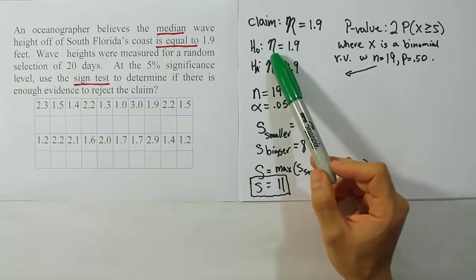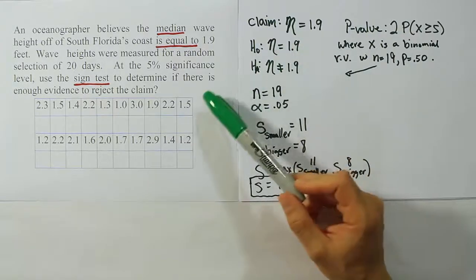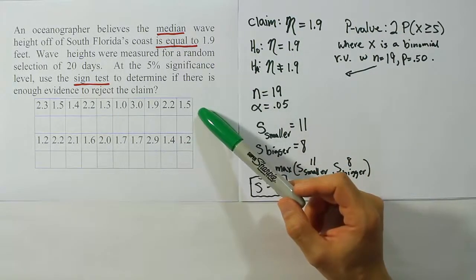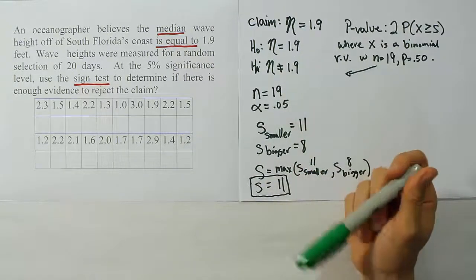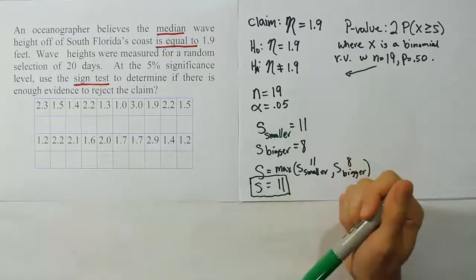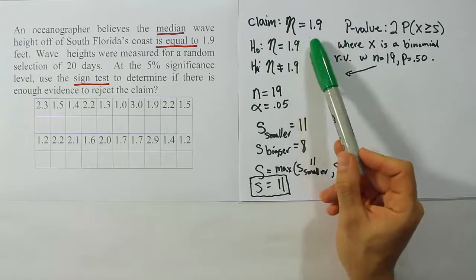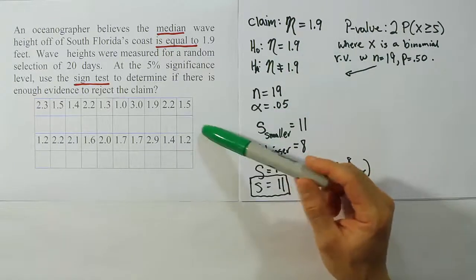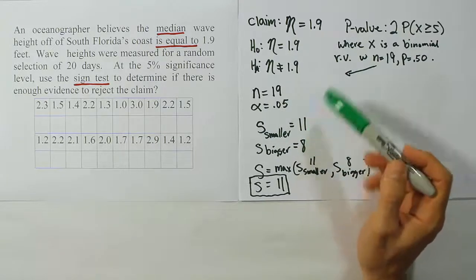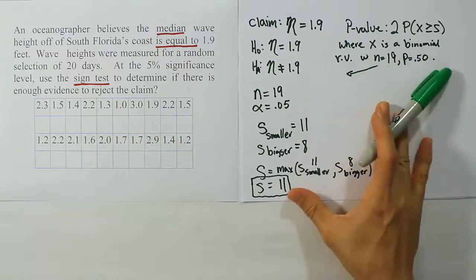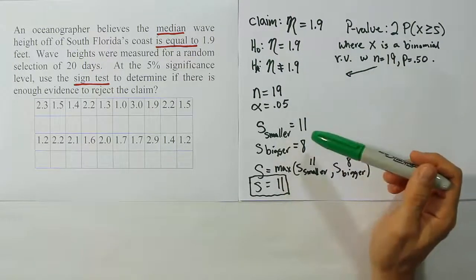Let's discuss that step just for a moment. We assume that X is a binomial random variable because basically this procedure is being tested about the median. And what we're saying is that essentially the median has a 50-50 chance, and any number from our data set, if the median really is 1.9, has a 50-50 chance of being either above or below. There's a 50% chance you're below the median, a 50% chance you're above the median because the median is defined as the 50th percentile.